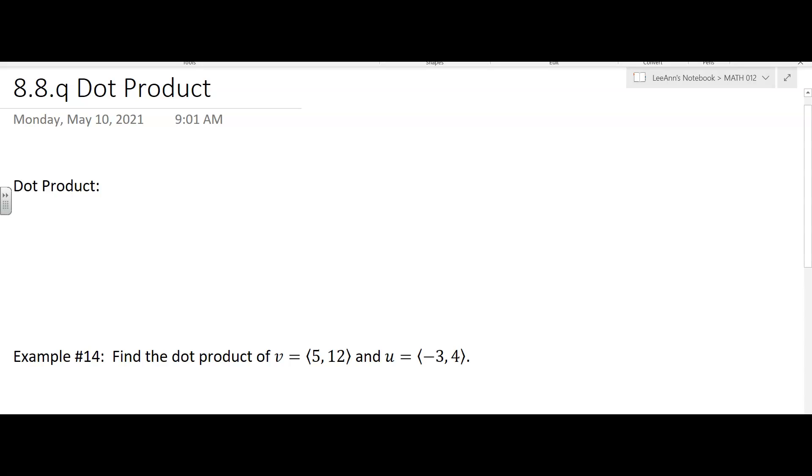Now we're going to talk about what's called a dot product. We talked about scalar multiplication with a vector, so you take a real number and multiply it times a vector and you get a vector, right?